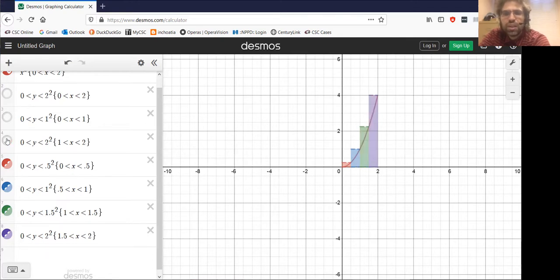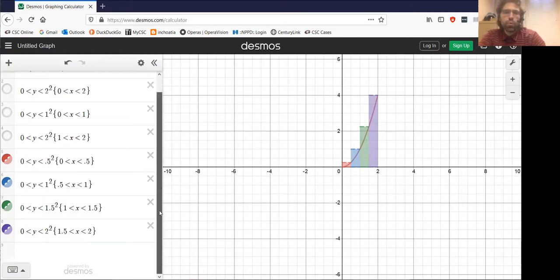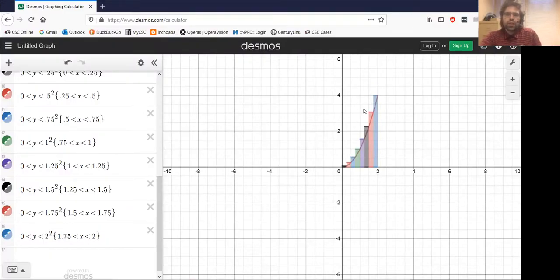Maybe one more example, where we'll use eight rectangles. Again, the area included in these rectangles isn't quite the area under the curve. We still have stuff that we don't want, but it's better than our last approximation. And if we used more rectangles, it would be better still.